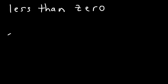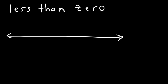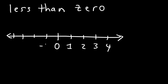If you think about a number line, here we have zero in the middle, and to the right we have positive integers, such as 1, 2, 3, and 4. But to the left, we have negative integers, like negative 1, negative 2, negative 3, and so forth.